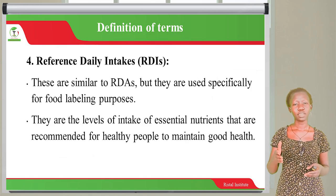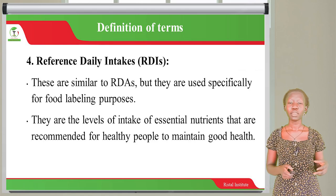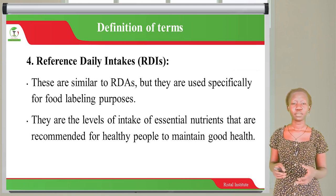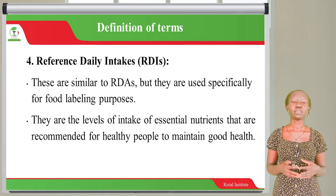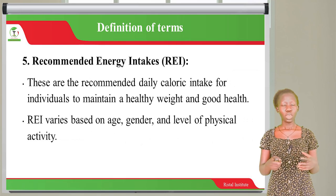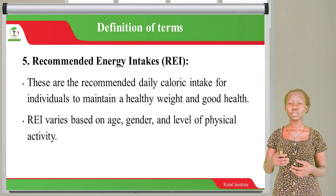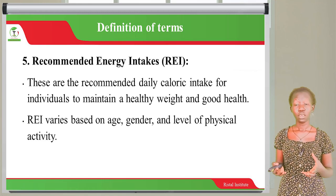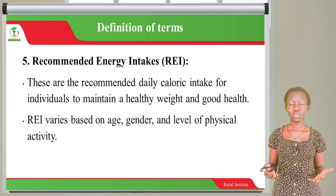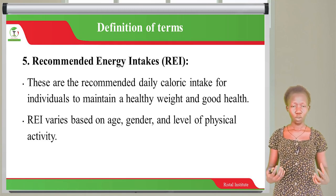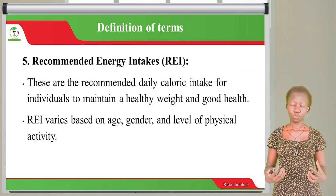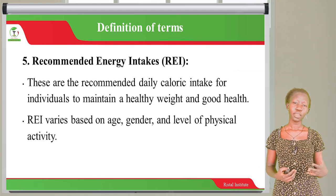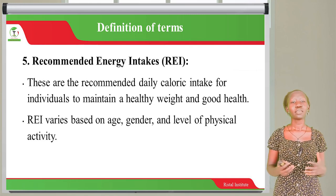We also have Reference Daily Intake, which is similar to Recommended Dietary Allowances — the levels of intake of essential nutrients recommended for healthy people to maintain good health. We also have Recommended Energy Intake: the recommended daily calorie intake for individuals to maintain a healthy weight and good health. These also vary based on age, gender and level of physical activity, because being extremely overweight can cause problems like obesity, diabetes, hypertension and many other challenges.